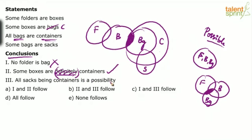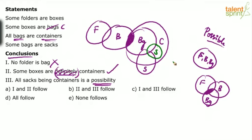Conclusion 3: All sacks being containers is a possibility. Although in the basic diagram all sacks are not containers, this is a possibility-type conclusion. A possibility conclusion need not be true in every diagram — if it is true in even one diagram, it is considered true. You can draw the diagram such that sacks are placed entirely inside containers, satisfying 'some bags are sacks' without violating any statement. So all sacks being inside containers is possible. Conclusion 3 is also true. Therefore, conclusions 2 and 3 follow — the answer is option B.